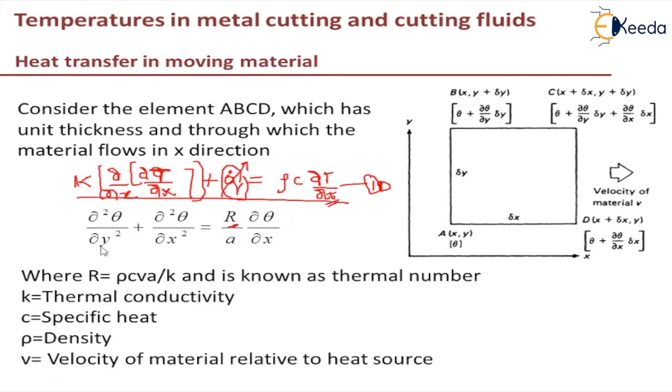Where R will be equal to rho c v a by k, so k is the thermal conductivity. It is called the thermal number, where k is thermal conductivity, c is specific heat, rho is density, and v is velocity of material relative to the heat source. Here for metal cutting we can take v as cutting speed, and a will be equal to area of undeformed chip.